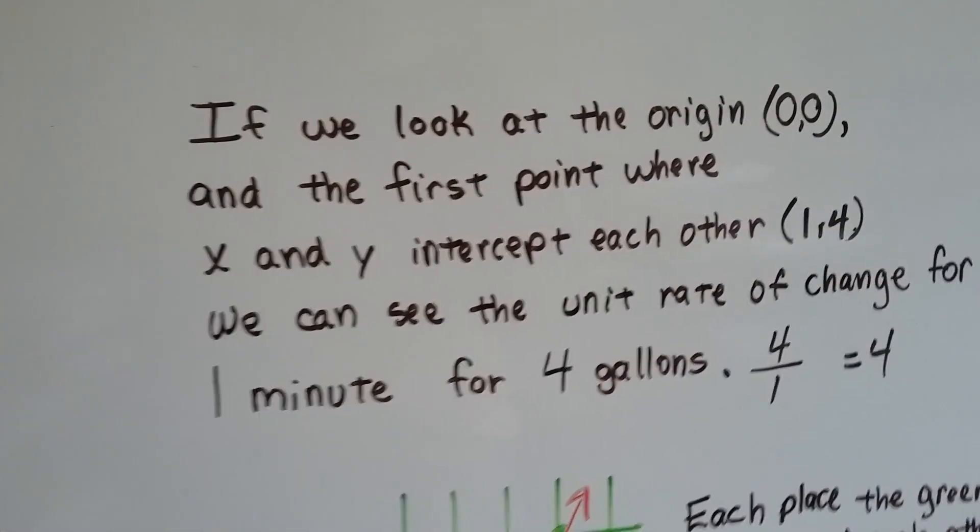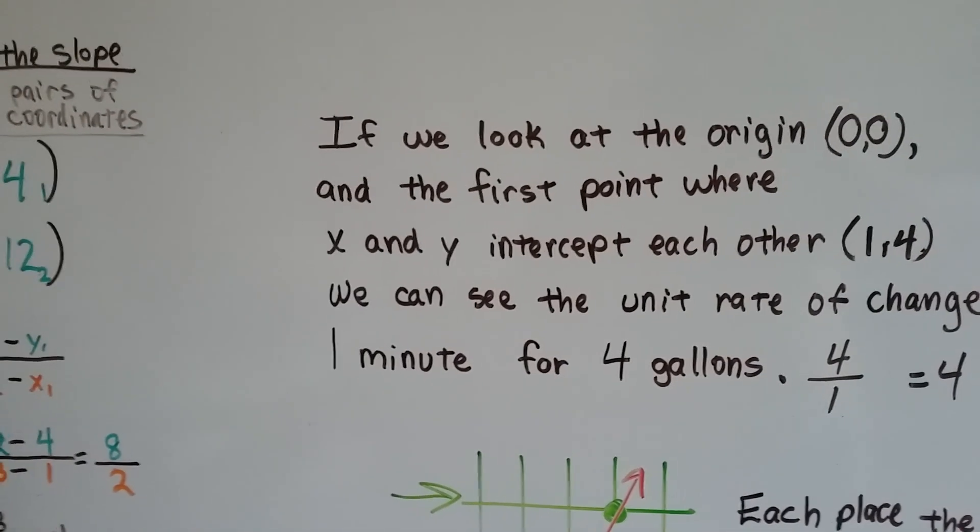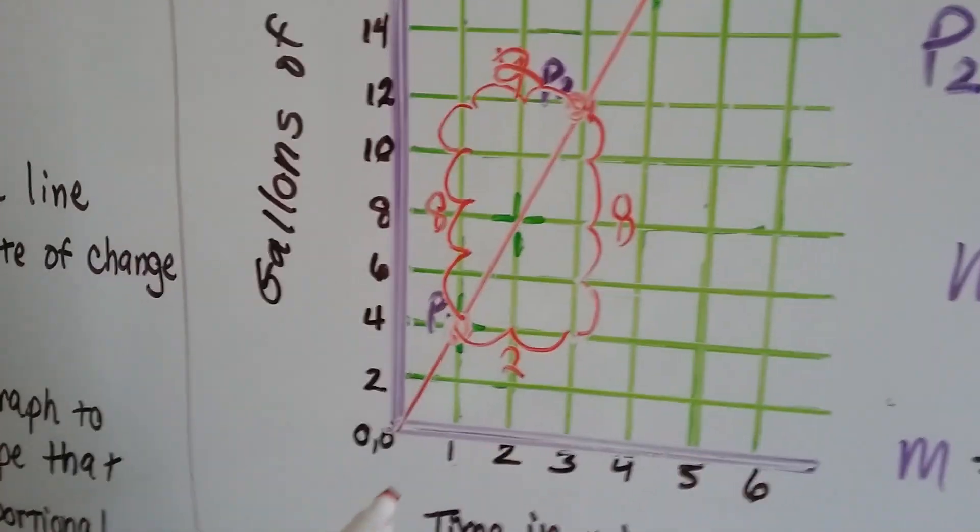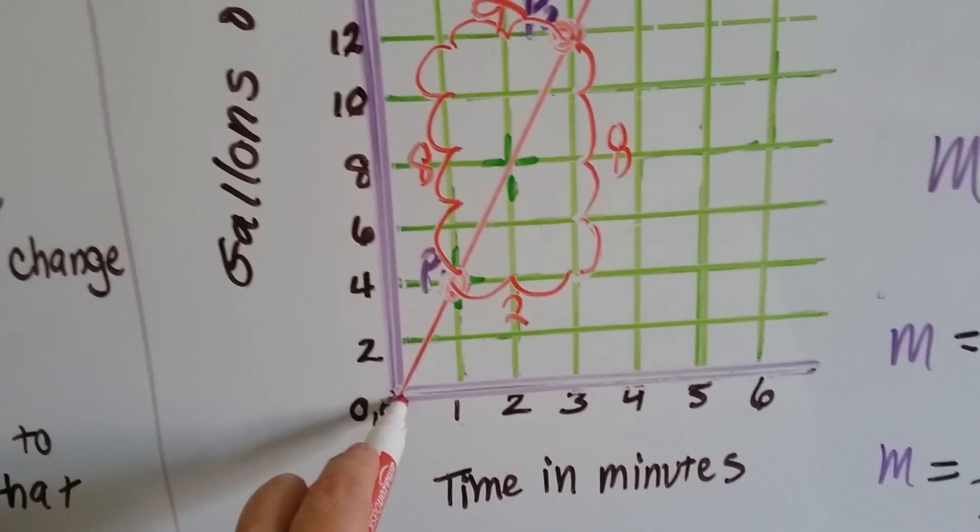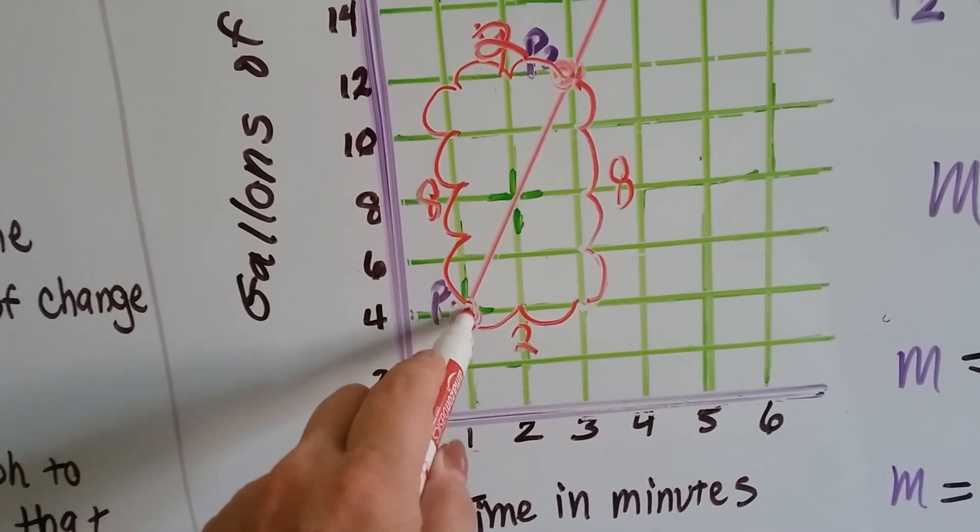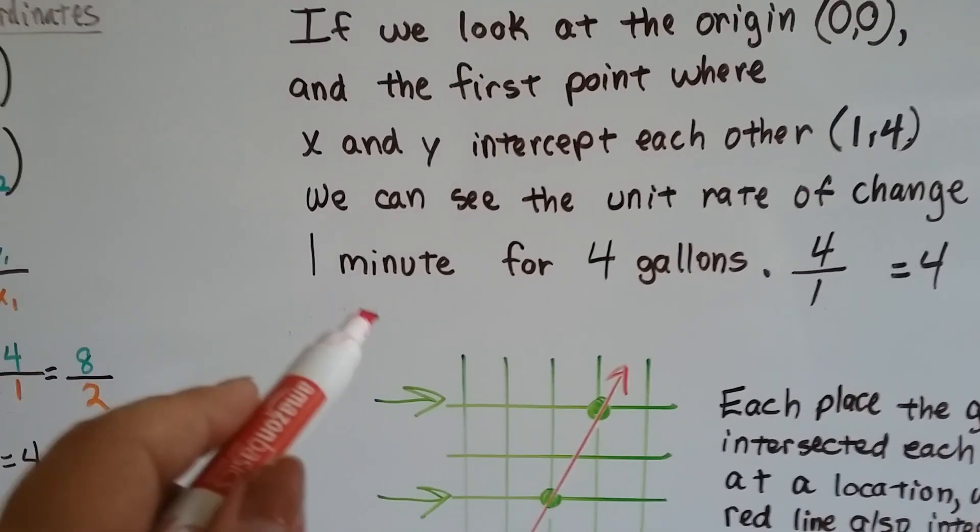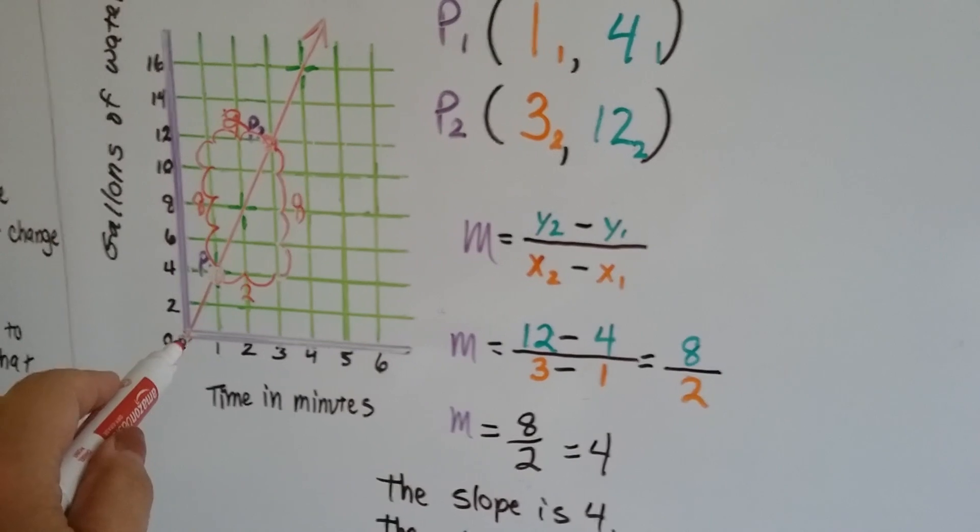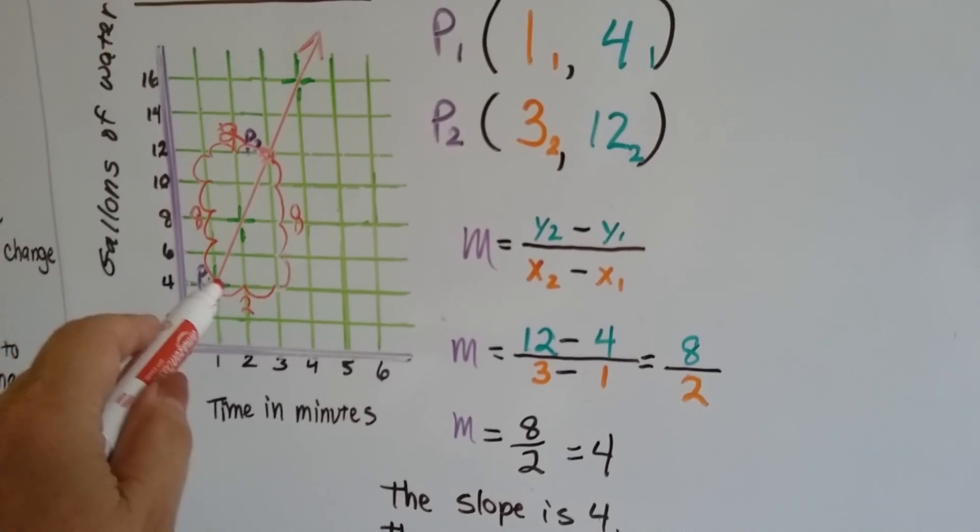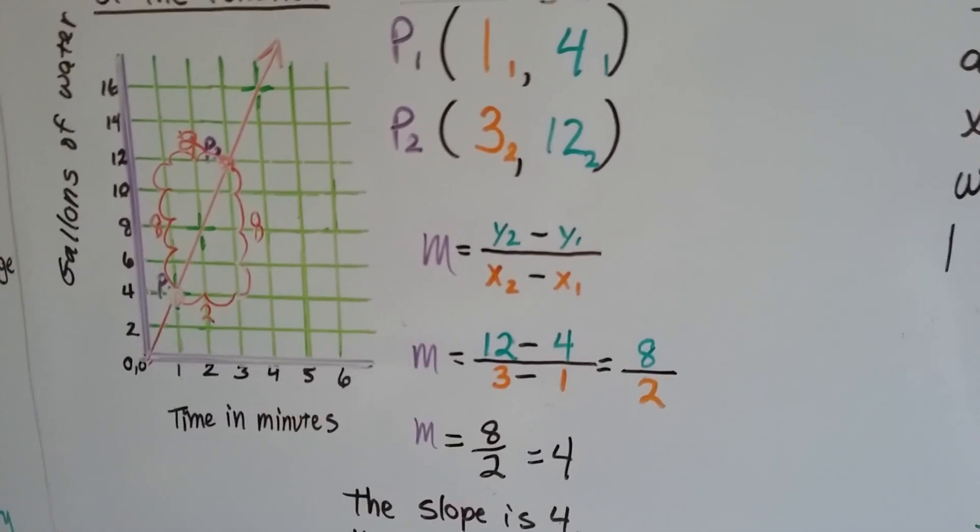If we look at the origin, the zero, zero spot on this graph, and the first point where x and y intercept each other, one, four, we can see it's the first spot from zero, zero, to where the green and the red lines actually crossed each other, was this one, four. We can use that. We can see the unit rate of change for one minute for four gallons just by looking at that. Just by comparing from the origin to this spot, we can see it's one unit of minutes and four gallons of water. We can see that right there.